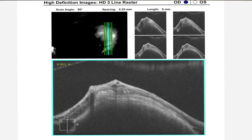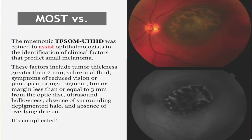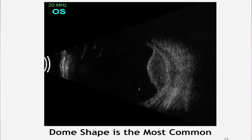The mnemonic I suggest to distinguish melanomas from suspicious nevi is MOST. There's another mnemonic, SVOM UHHD, which encompasses a lot of different findings but is complicated and difficult to remember. Also remember that the dome shape is much more common than the mushroom shape — not all melanomas are mushroom-shaped. In the Collaborative Ocular Melanoma Study, only 25% were mushroom-shaped.